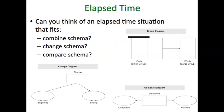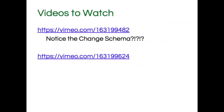Depending on the type of word problems, you can use a schema. Think about an elapsed time situation that fits the combined schema — where you have two different amounts of time and combine them to find a total — or a change schema, like the movie theater example, or a compare schema where somebody did a task for one amount of time and somebody else did a different task, and you find the difference. Schema can be used for the concept of elapsed time. There are videos posted in the shared drive on how to teach elapsed time that I would encourage you to watch.